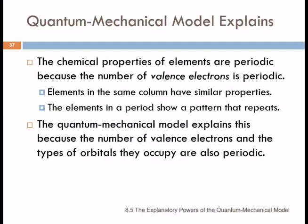Elements in the same column have similar properties. Elements in a period show a pattern that repeats. That pattern that we observe is due to the valence electrons showing similar patterns.